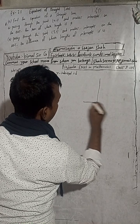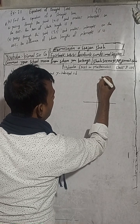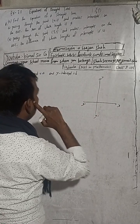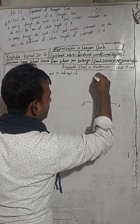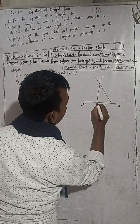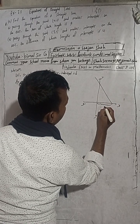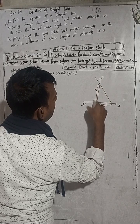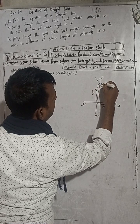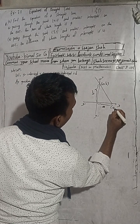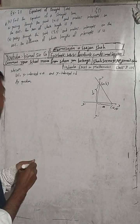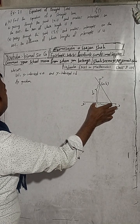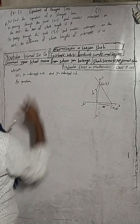If you want to understand with a figure — suppose this is our y, y-dash, x, x-dash. Suppose a line passes this way; then this distance is a, that is the x-intercept. And if this distance is b, from here to here, then this point will be (0, b) and this point will be (a, 0). So this is the length of x-intercept and this is the length of y-intercept.